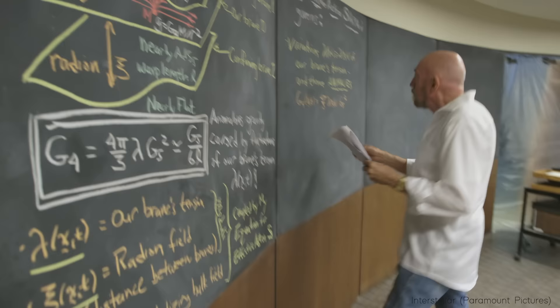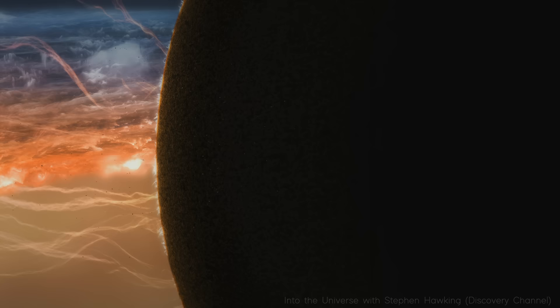For example, in a famous wager by Hawking and Kip Thorne against John Preskill, they hedged that the information that falls into the black hole was irretrievably lost to the universe. Although it has to be said that Hawking later changed his mind on this and conceded the bet.